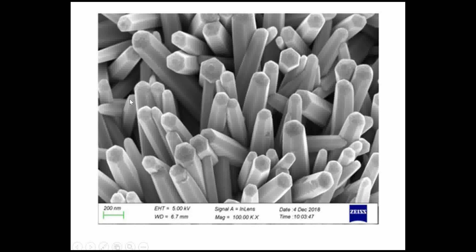We can see ZnO nanorods as an example — the typical tip diameter is around 200 nanometers and they have hexagonal edges. This shows what nanometer-scale information can be achieved from SEM. The working of SEM should now be clear. If you have any comments or doubts, please ask.